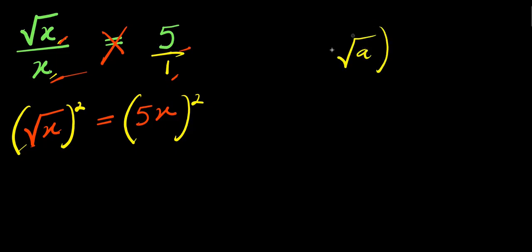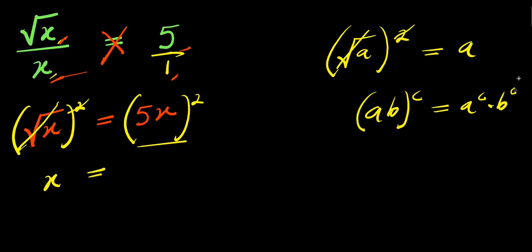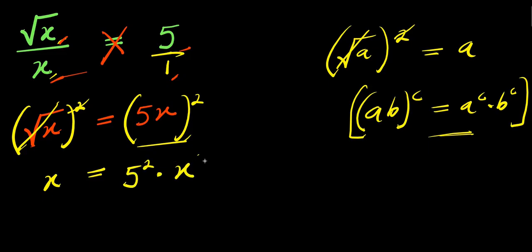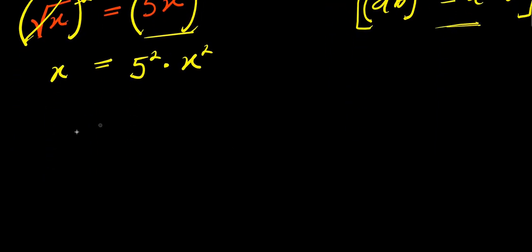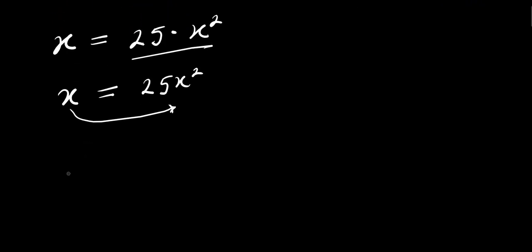If you have square root of a raised to the power of 2, this gives you a, because the square root cancels with the square. So the square root here eliminates the square. We have x equals — and using the identity that (a times b) raised to power c equals a^c times b^c — we apply this here: we get 5 squared times x squared. So from here we have x equals 25 times x squared.